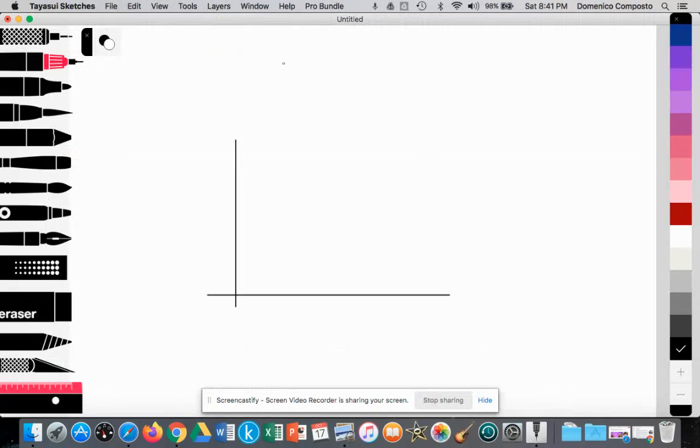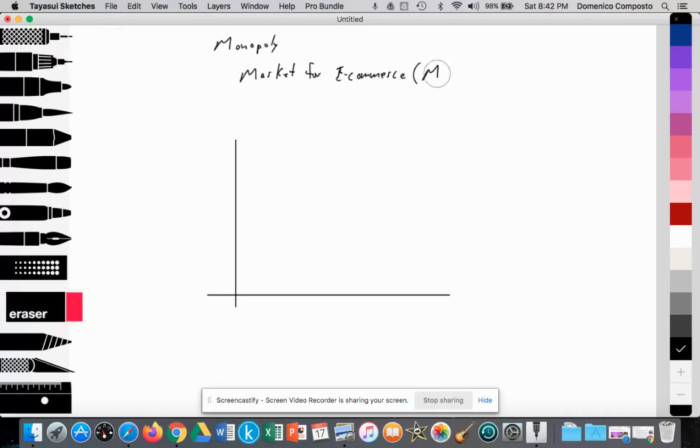Okay, so let's go ahead and draw this model. I'll just make a note that we're going to be working on drawing a monopoly. Here we have monopoly as the market structure that we're looking at. I'll make that even better. And we're going to look at the market for e-commerce, the market for e-commerce. The dominant firm that we're looking at is Amazon.